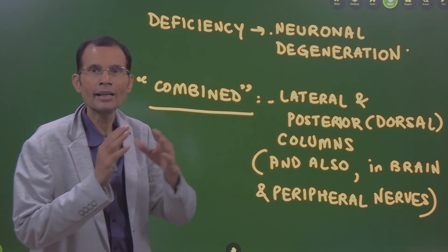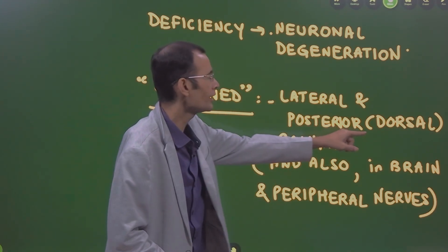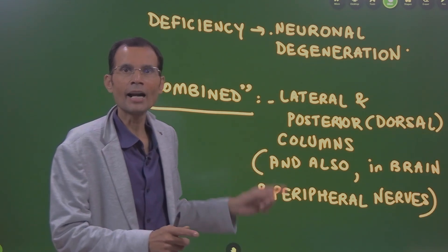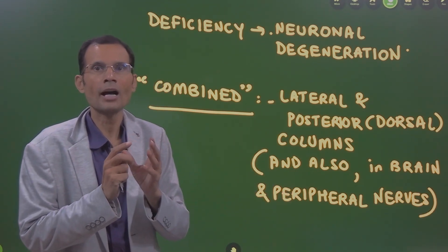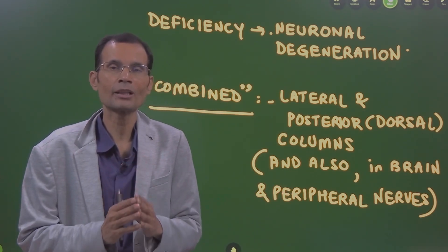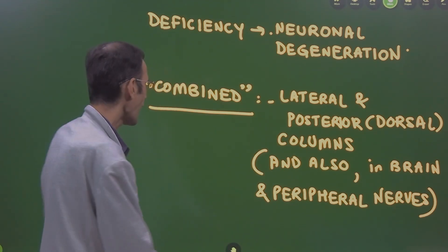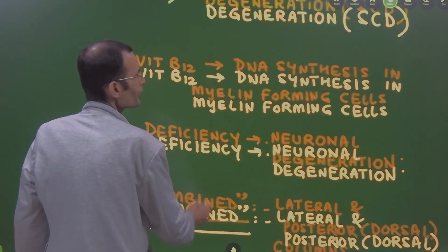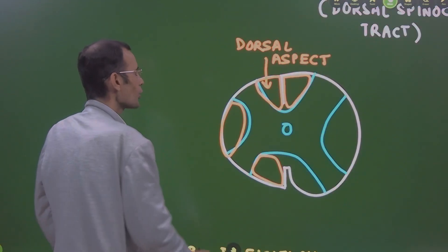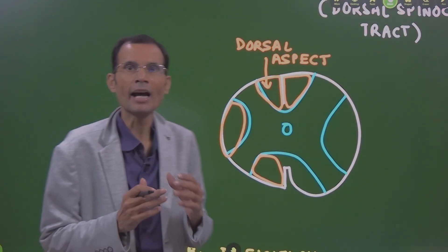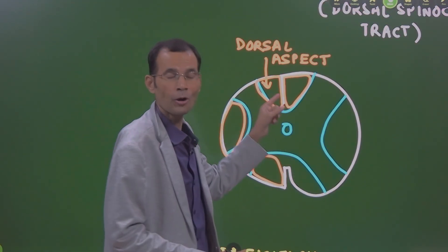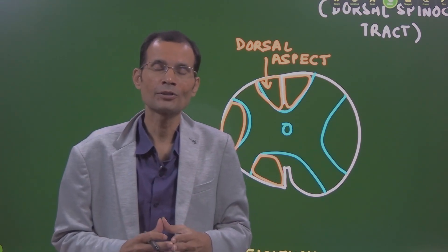But the point that we are highlighting here is that dorsal and lateral, these two white columns are degenerated in the vitamin B12 deficiency and the proprioception, whether conscious or unconscious is carried from the dorsal part of the spinal cord.